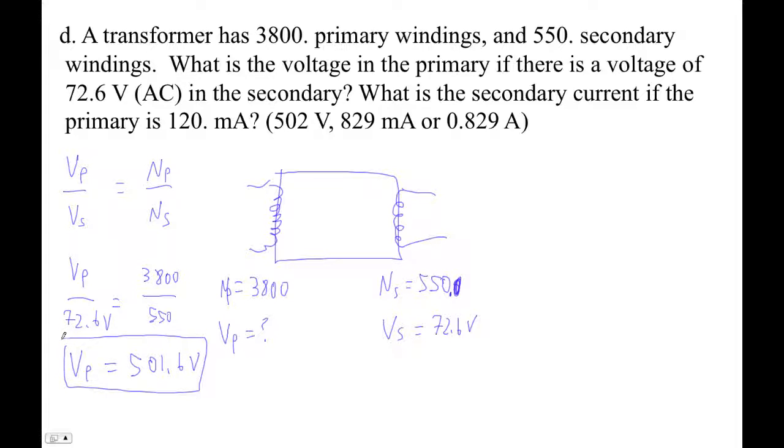And then it says, what is the secondary current if the primary is 120 milliamps? 120. Then the current in the secondary. Well, if we're stepping the voltage down, we're going to increase the current. The current is going to step up.